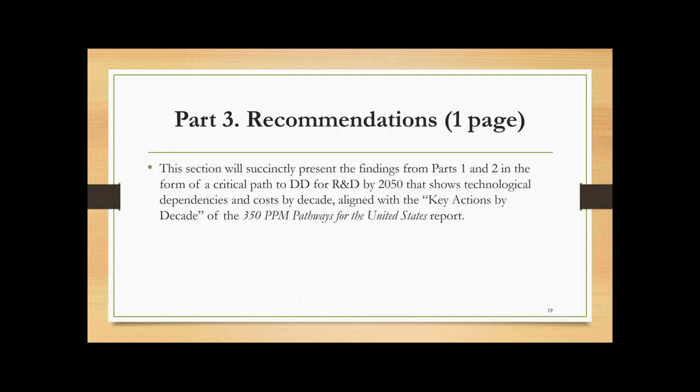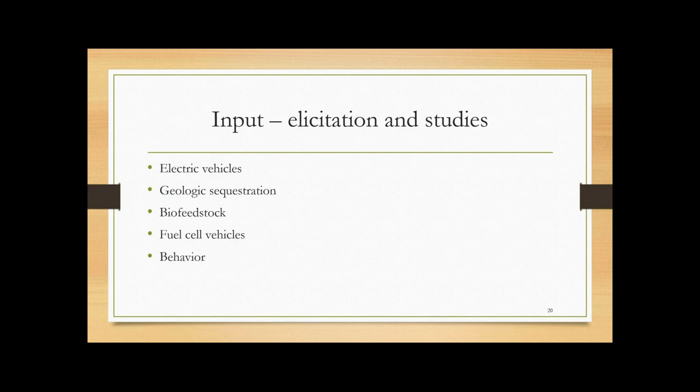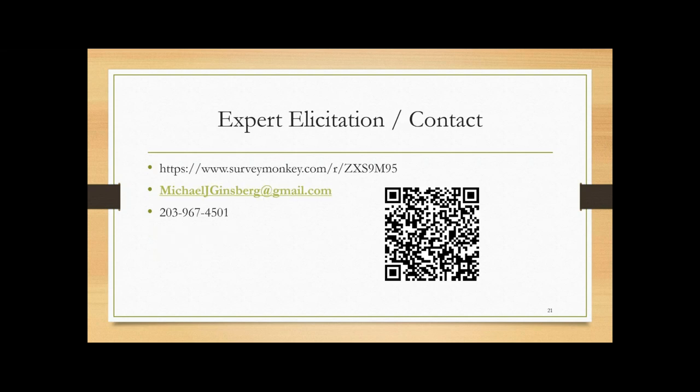And then, finally, just I will succinctly end the chapter with the key findings from parts one and two as well as an overall timeline or critical path to deep decarbonization that shows the dependencies between technology groups by decade. So again, I want to emphasize that these are the areas that I'm currently engaged in research on. And I welcome, in particular, input from the research teams at various universities who would like to share either reports or their expert insights. And to that effect, I have created a survey, which you can see at the link here. You can also take a screenshot of this code or you could also contact me via email or at my number. So thank you very much and looking forward to everyone's feedback.